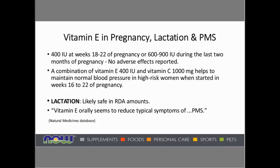How safe is vitamin E in pregnancy, lactation, and PMS? Quite safe. 400 IUs at weeks 18 to 22 of pregnancy, or 600 to 900 international units during the last two months of pregnancy, showed no adverse effects. A combination of vitamins E and C — 400 IUs and 1,000 milligrams of vitamin C — helps maintain normal blood pressure in high-risk women when starting in weeks 16 to 22 of pregnancy. Lactation is likely safe in RDA amounts. Vitamin E orally also seems to reduce typical symptoms of PMS.